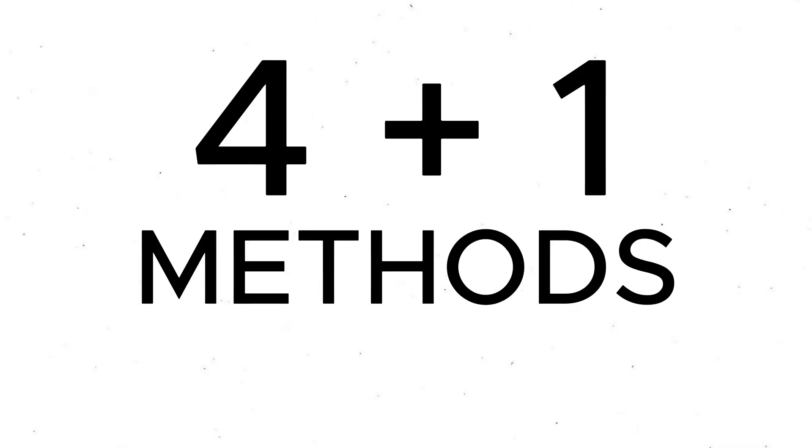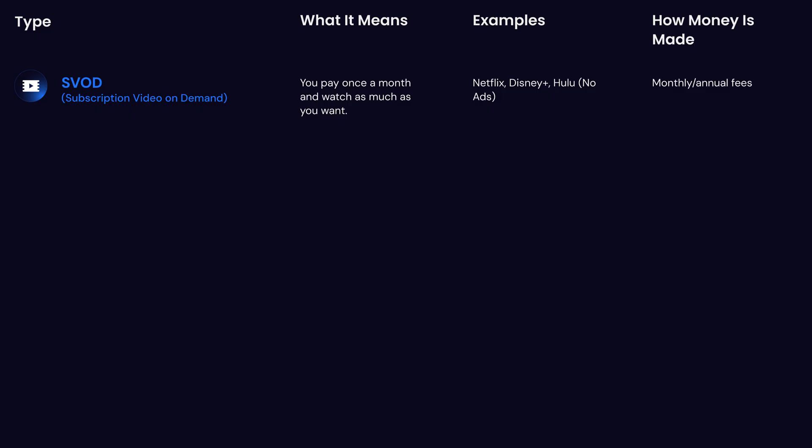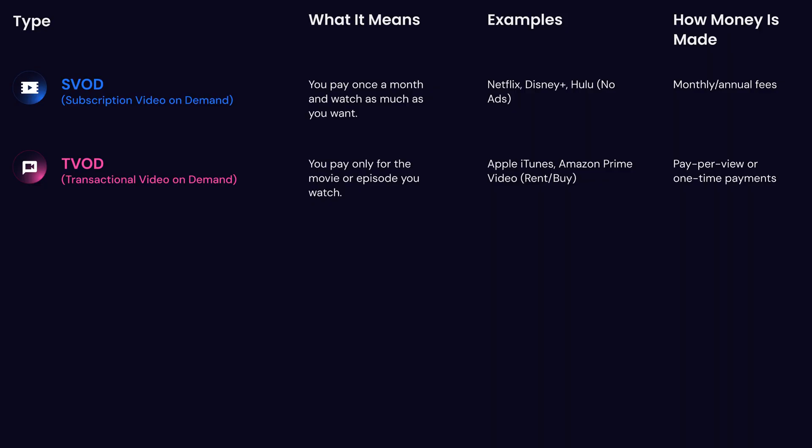But I know what's important to you, and that's content monetization. There are four main ways to monetize through your OTT app. The first category is SVOD — subscription-based video-on-demand. Think of this as your normal Netflix, Disney+, Hulu, or Prime Video subscription: no ads, no extra fees, once a month.